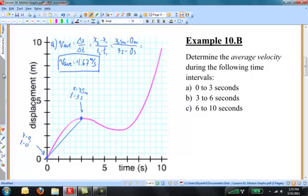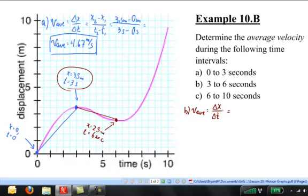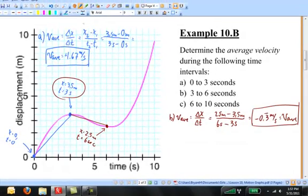Now I want to go from 3 seconds to 6 seconds. It looks like that the 6 second time interval is there. I started at 3 seconds at a position of 3.5 meters. But now at 6 seconds I see that my position looks like it's 2.5 meters. So now I want to find the slope of the line that connects those two points. That line right there. Let's figure it out. My final position was 2.5 meters. My initial position was 3.5 meters. My final time was 6 seconds. My initial time was 3 seconds. So now I'll put that into my calculator. I find that the object turned around. It actually moved in the negative direction. Still on the positive side of the origin. But moving in the negative direction with an average speed of negative 0.3 meters per second.